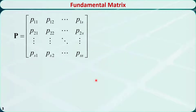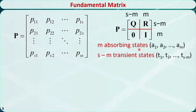Let P be the transition matrix of a discrete time Markov chain with S states. The transition probability from state i to state j is denoted by element Pij. Assume it is an absorbing chain with m absorbing states A1, A2 through AM, and S-M transient states T1, T2 through TS-M.